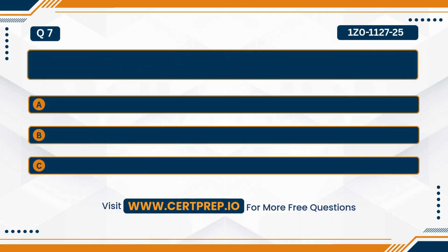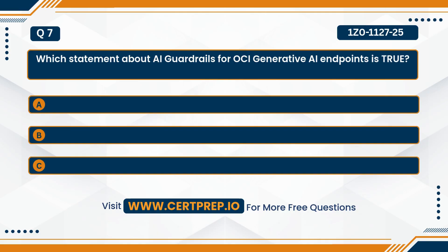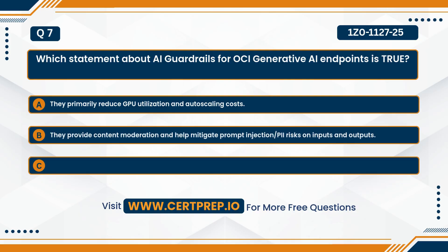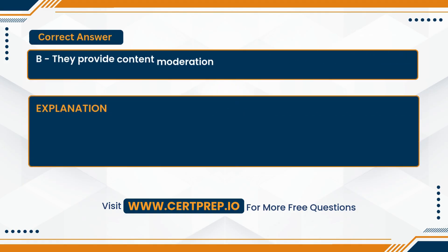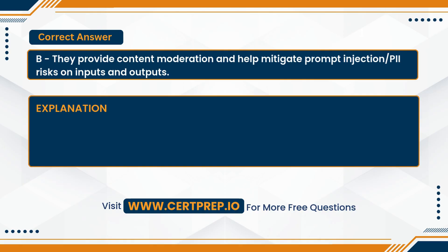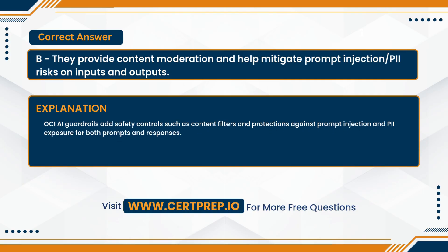Question seven. Which statement about AI guardrails for OCI Generative AI endpoints is true? A. They primarily reduce GPU utilization and auto-scaling costs. B. They provide content moderation and help mitigate prompt injection and PII risks on inputs and outputs. Or C. They automatically increase the context window for long documents. The correct answer is B. OCI AI guardrails add safety controls such as content filters and protections against prompt injection and PII exposure for both prompts and responses.